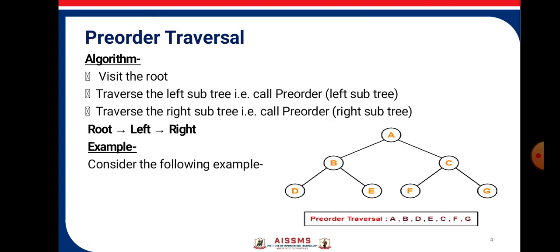Now talking about the pre-order traversal, the algorithm states that in pre-order traversal we visit the root, then we traverse the left subtree called the pre-order left subtree, and then we traverse the right subtree called the pre-order right subtree. So the sequence is: first root, then left, then right.